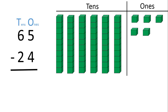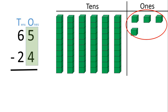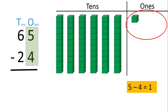Let's begin subtraction from the ones place. We must subtract 4 from 5 — that is, take away 4 from 5. Let's take away 4 ones blocks from the 5 blocks we have here: 1, 2, 3, 4. We are left with 1 ones block. 5 minus 4 equals 1. So write down 1 in the ones place.